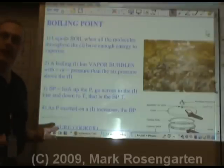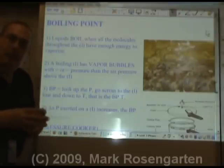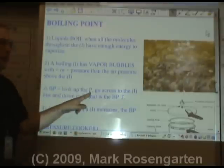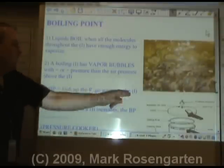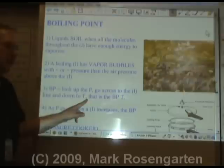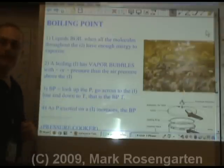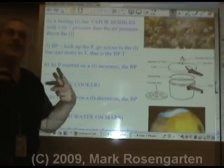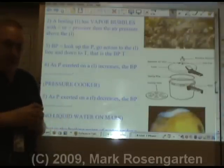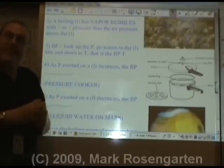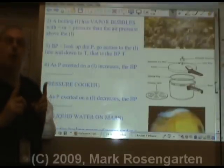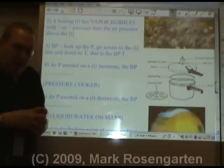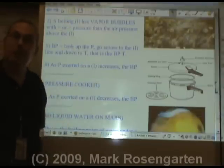So how do you know when a liquid has enough vapor pressure to form vapor bubbles that will survive? To find the boiling point, you look up the pressure, go across to the liquid line you're interested in, and then down to the temperature — that's the boiling point temperature. If you raise the pressure, it's going to be harder for those vapor bubbles to form, and therefore the boiling point will go higher, because you need to heat the molecules more to overcome that excess pressure.